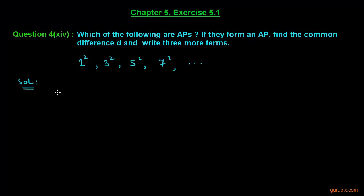Here is the 14th part of question 4 of exercise 5.1 of chapter 5. This question asks us to check whether this given sequence of numbers is an AP or not. If this is an AP, then we have to find out the common difference D and write three more terms.